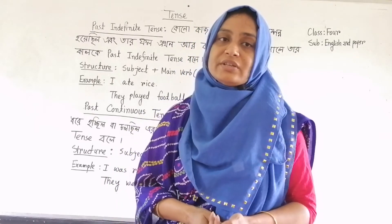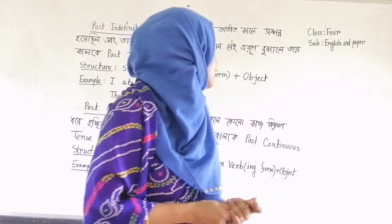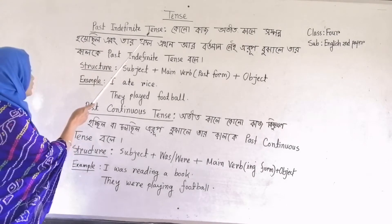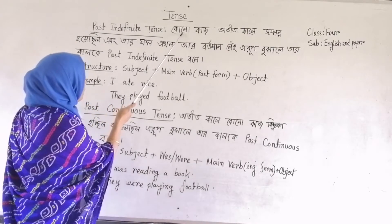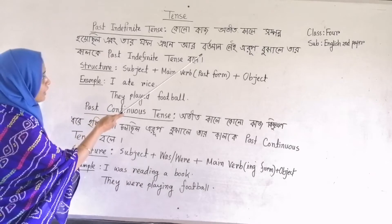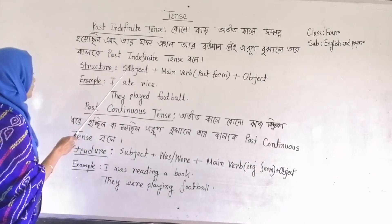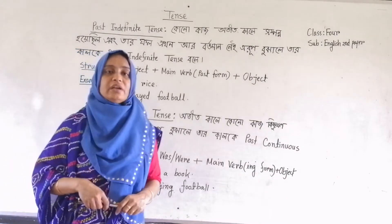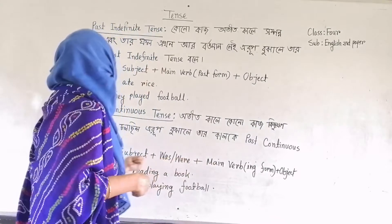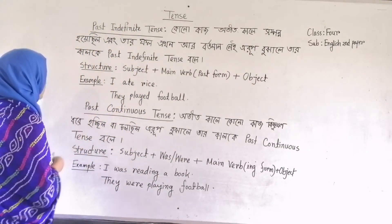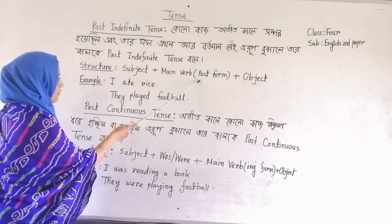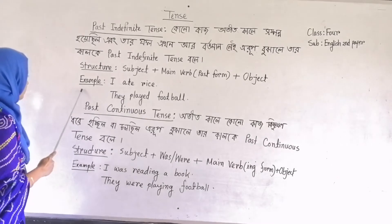Dear students, let us know what is past indefinite tense. Look here — I have written the definition. Past indefinite tense indicates the action that took place in the past time. Now come to the structure: first we write the subject, then the main verb in its first form, then the object.